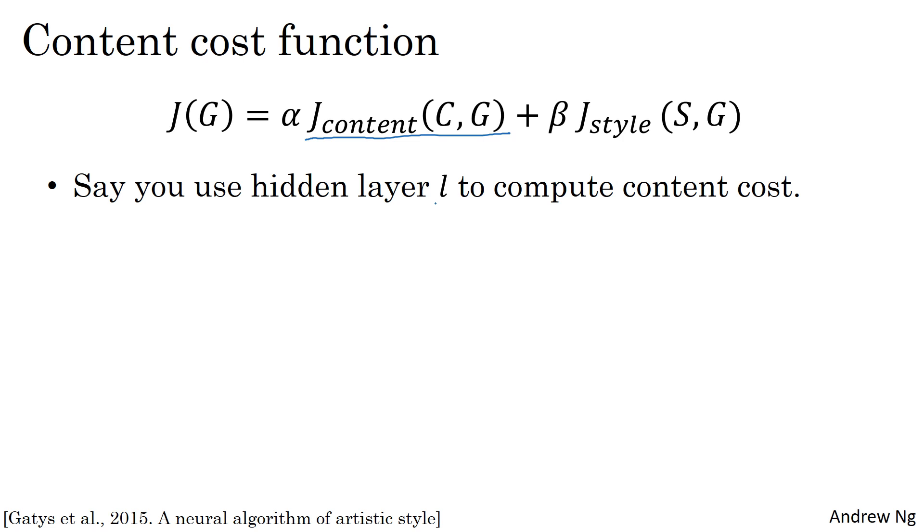So in practice, layer L is chosen somewhere in between, neither too shallow nor too deep in the neural network. You'll play with this yourself in the programming exercise this week, and I'll leave you to gain some intuitions with concrete examples. Usually L is chosen to be somewhere in the middle of the layers, neither too shallow nor too deep.